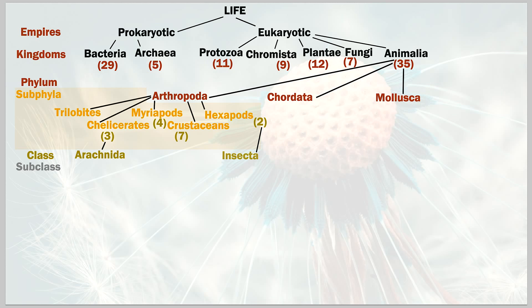Now we go into the subclass — another sub-grouping. Crustaceans have 13 subgroups total, arachnids have one subclass, and insecta have two subclasses. We're pretty much done exploring this side of the spectrum. If you are exploring something with an exoskeleton and no interior bones, you'd go further down these branches.